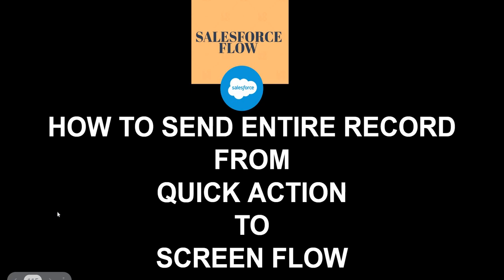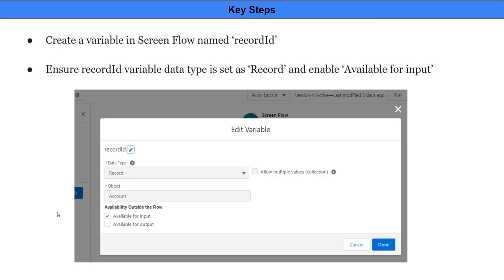In this video we are going to see how we can pass an entire record from a quick action to a screen flow. Typically, when we want a quick action to send the record that launched the flow, we create a screen flow variable named 'recordId', mark it available for input, and set the data type as text. The difference is: instead of text, if you change the data type to record and enable the variable as available for input, the quick action will automatically send the entire record to the flow. Let's see that with a quick demo.